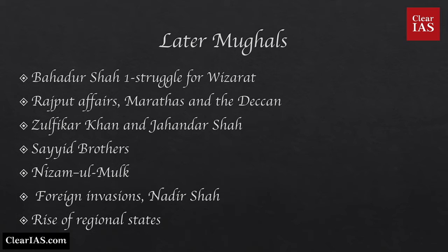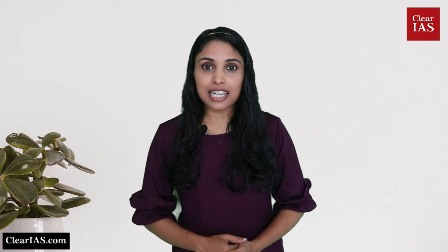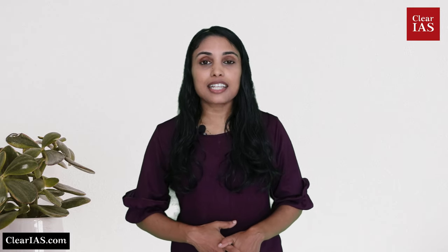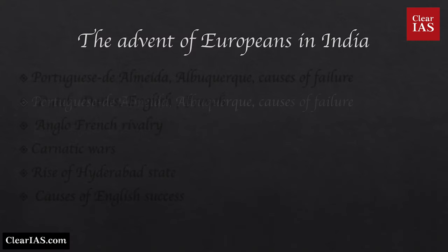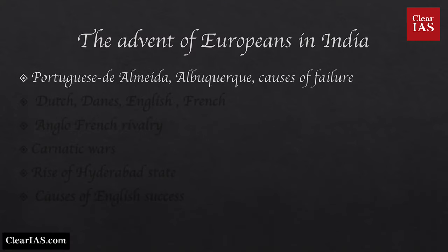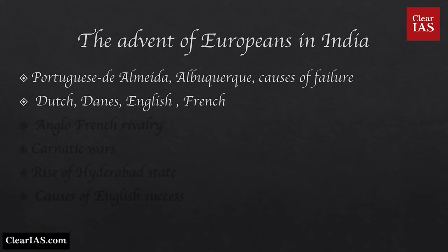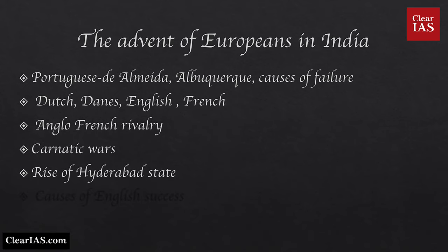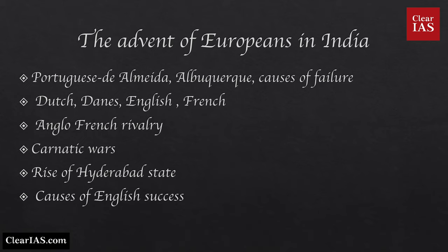Now we discuss the different subtopics of modern history, which are very important for both Prelims and Mains. First comes the advent of Europeans into India — things to learn include Portuguese in India, D'Almeida, causes of failure of the Portuguese empire, Dutch, Danes, English and French in India, Anglo-French rivalry, First Carnatic War, rise of Hyderabad state, Second and Third Carnatic Wars, and causes of English success.